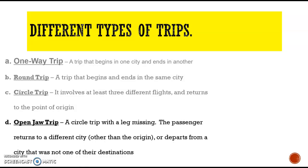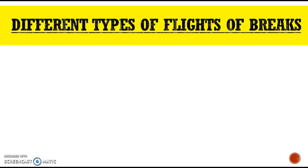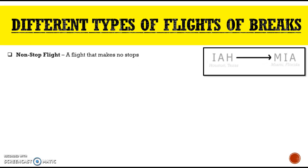Open jaw is like the circle trip — it has three or more cities; however, the beginning and ending cities are different. Now let's move on to flight breaks. First is the non-stop flight.